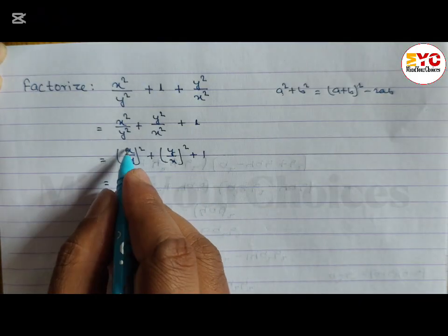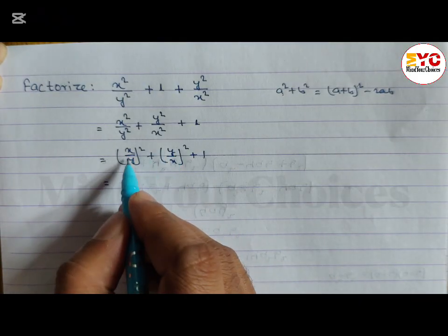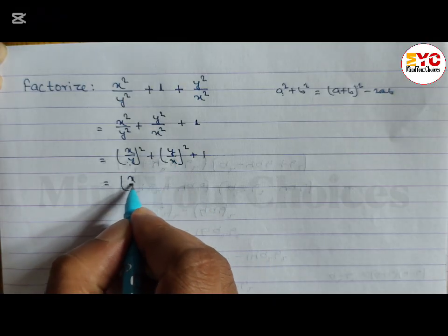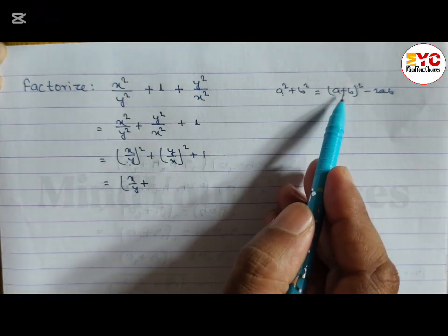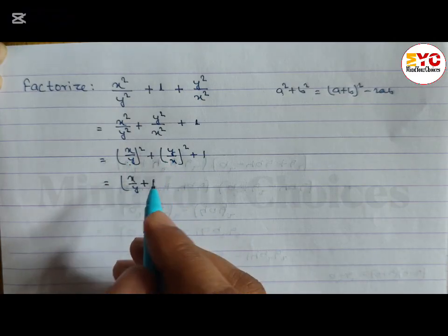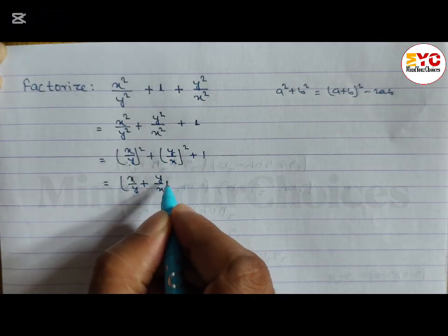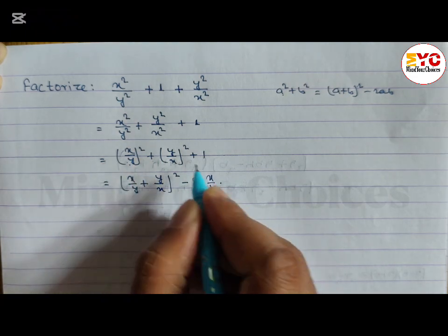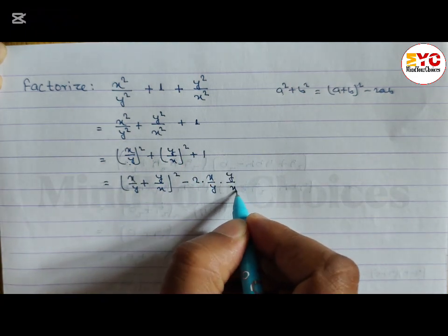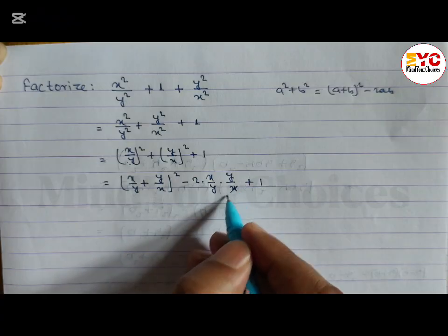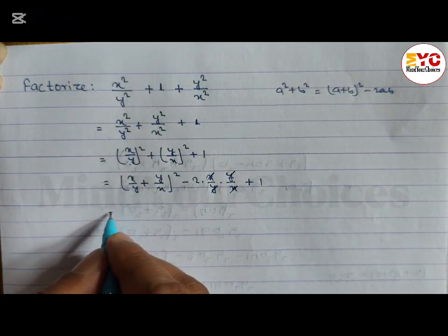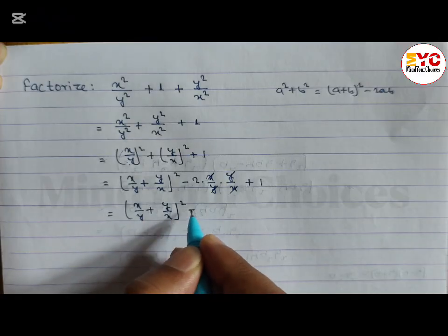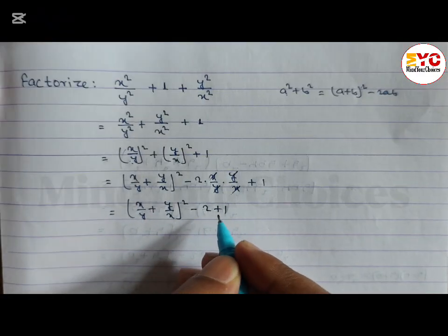In the place of a we have x by y, and in the place of b we have y by x. So we can write x by y plus y by x whole square minus 2ab. 2ab means 2 times x by y times y by x. The x's cancel and the y's cancel, so we get x by y plus y by x whole square minus 2 plus 1.